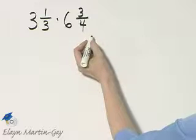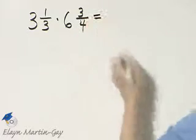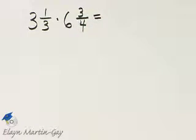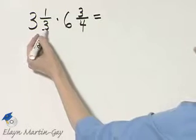Let's go ahead and multiply these two, though. To do so, we'll write each as an equivalent improper fraction. Remember how to do this.